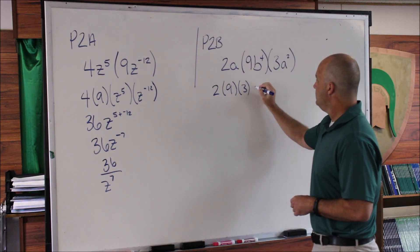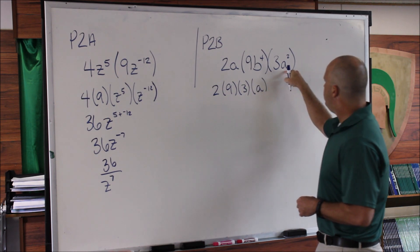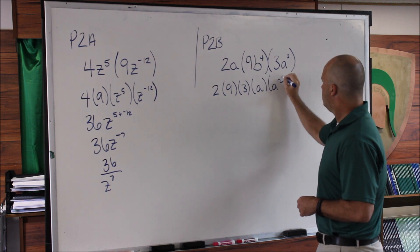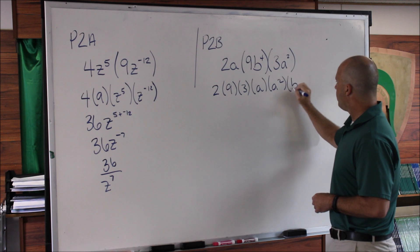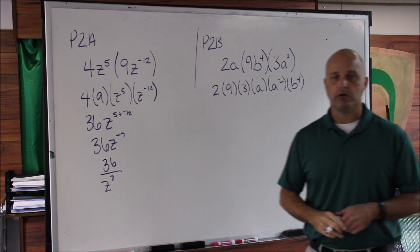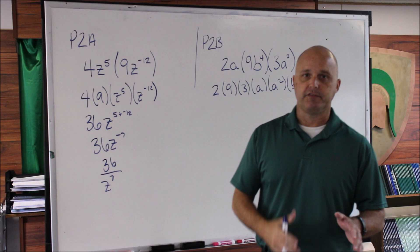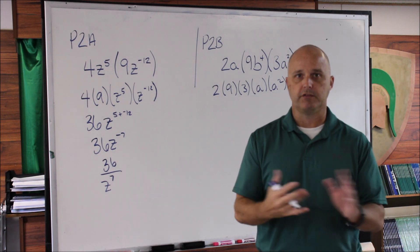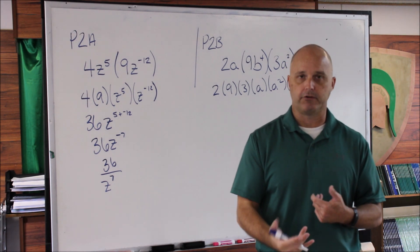Then I'm going to take this a, this a^2, and then finally the b^4 and write them out in alphabetical order. Now, once I've done this, I can start multiplying anything that's alike or working with the bases that are alike.